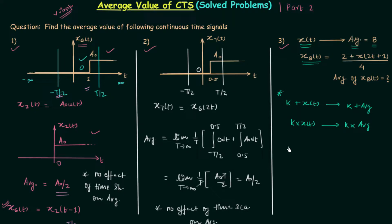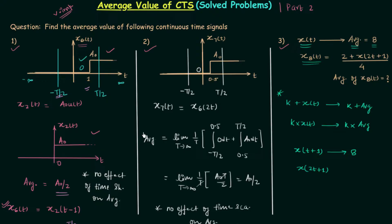Let's find the average value of signal x8t step by step. Starting with time shifting: x(t + 1). Since there is no effect of time shifting on the average, if x(t) has average equal to 8, then x(t + 1) also has average equal to 8. Now applying time scaling to get x(2t + 1): since time scaling has no effect on the average, the average value remains 8.